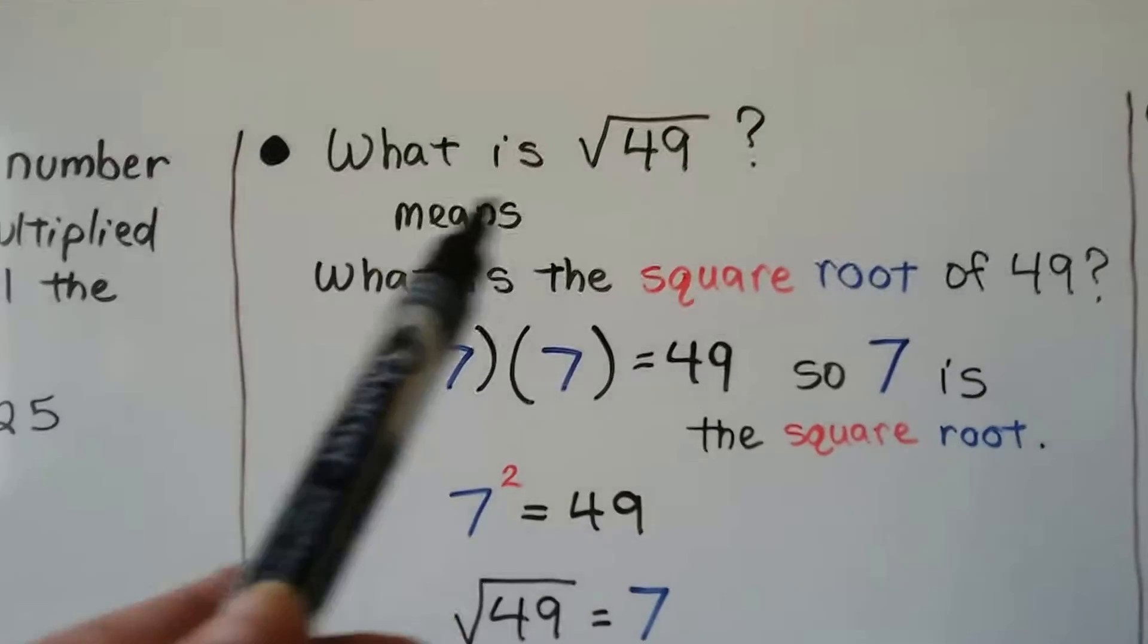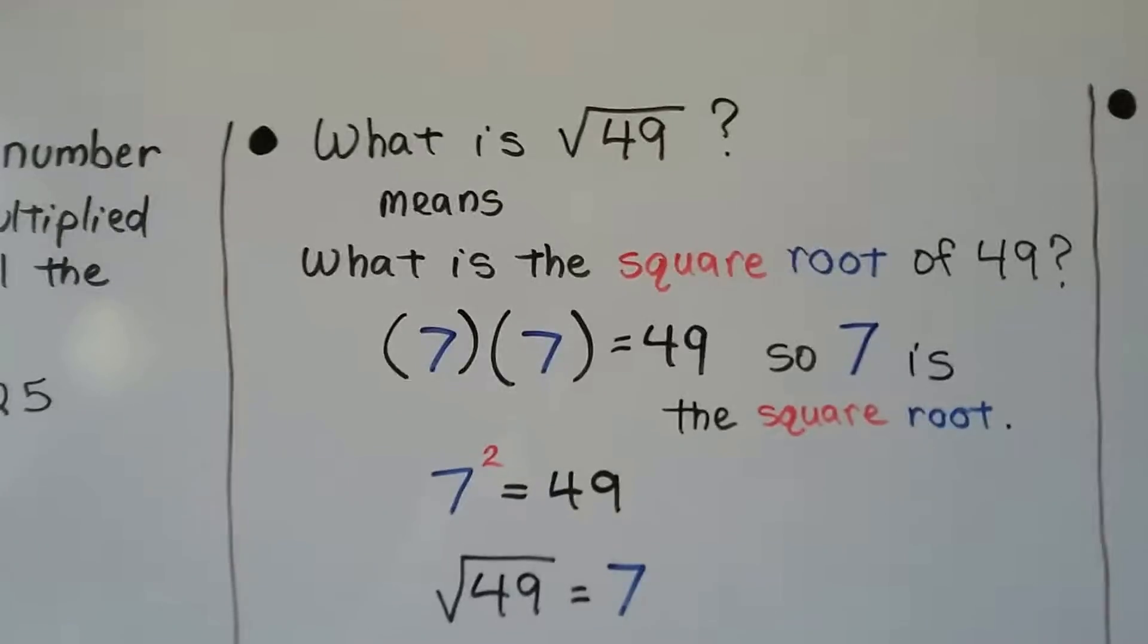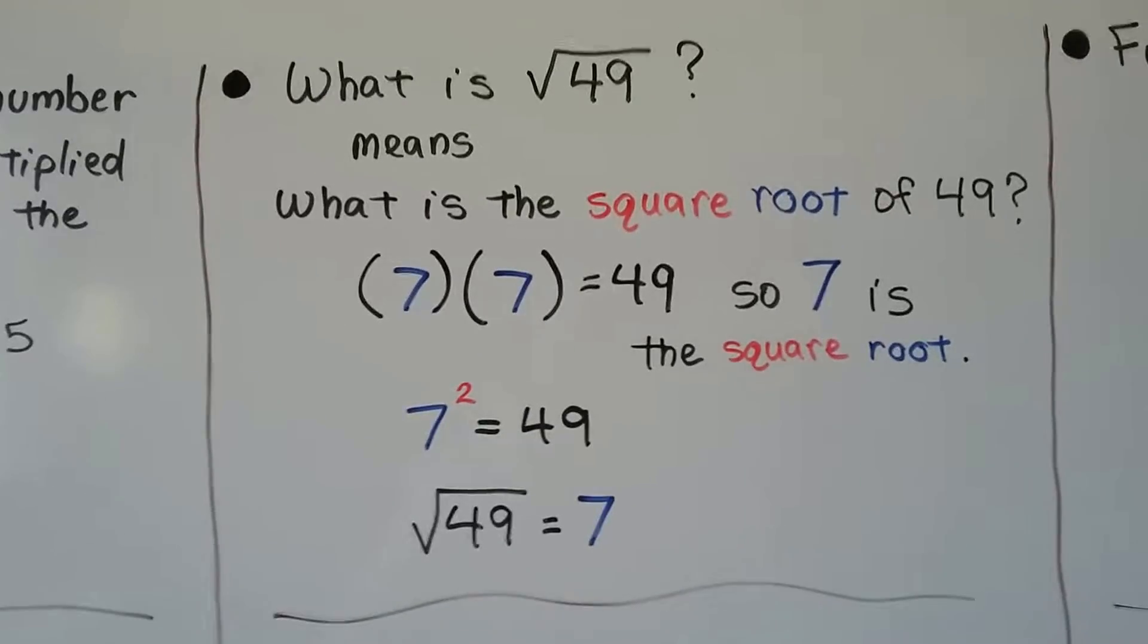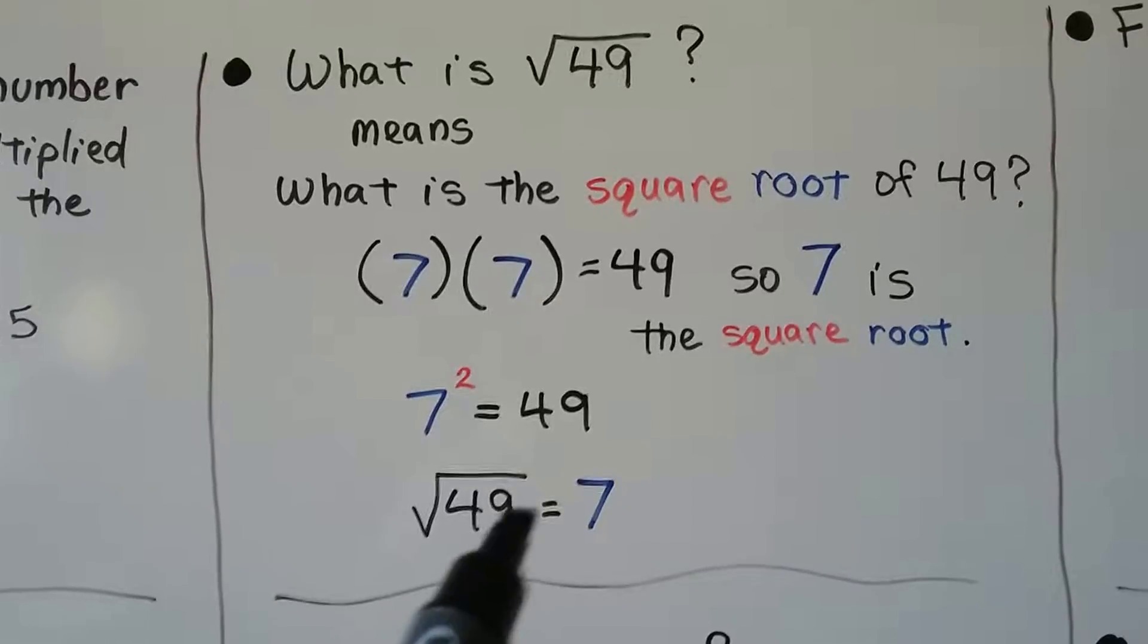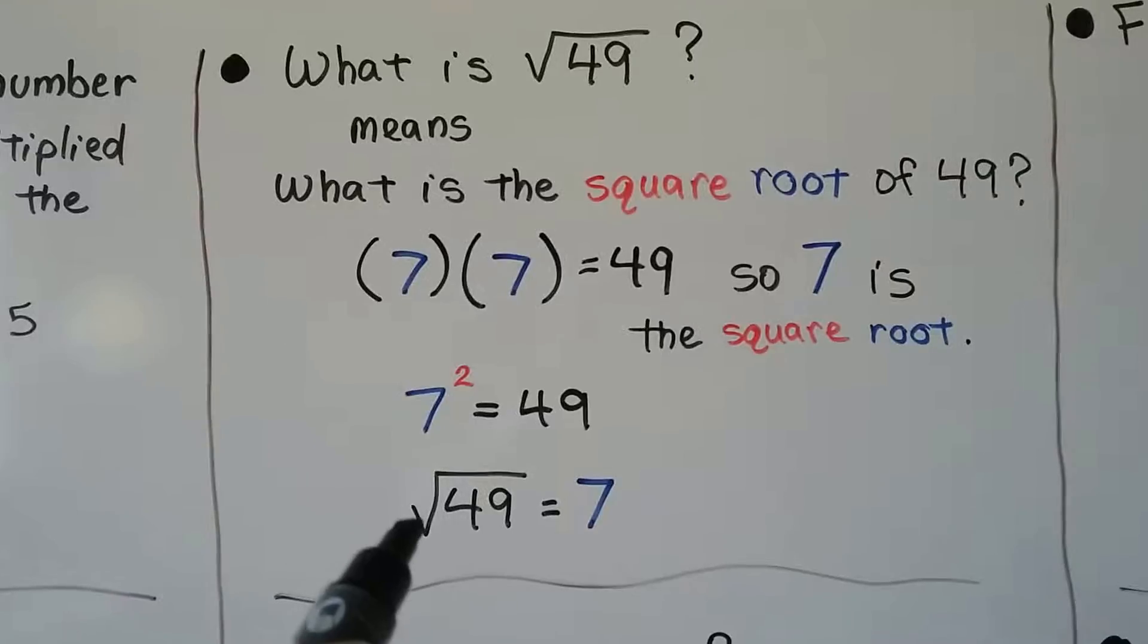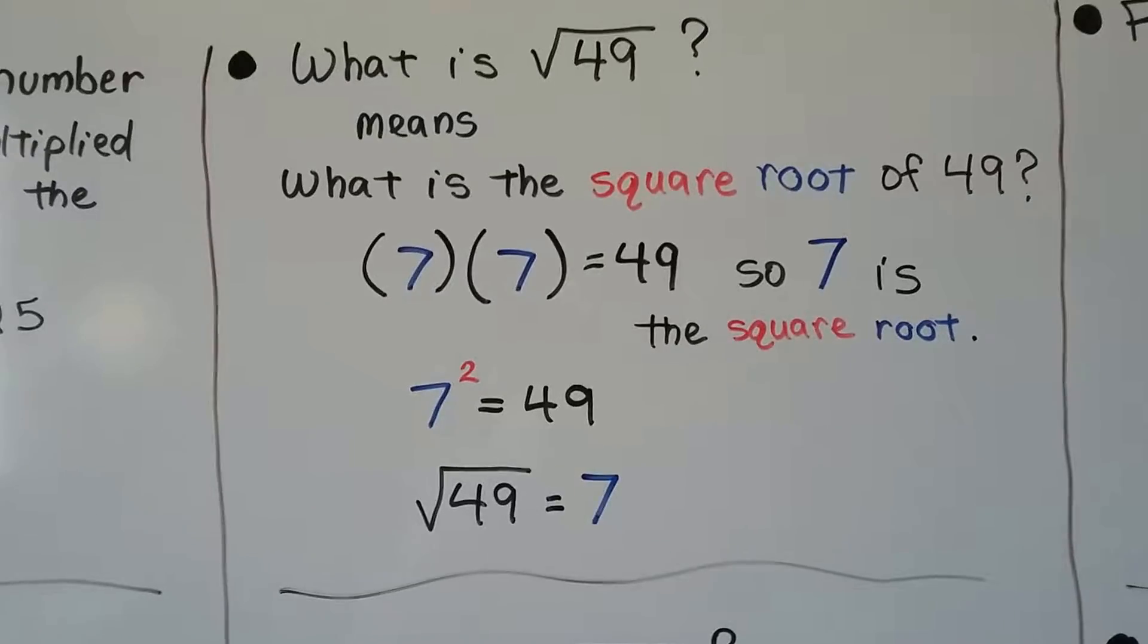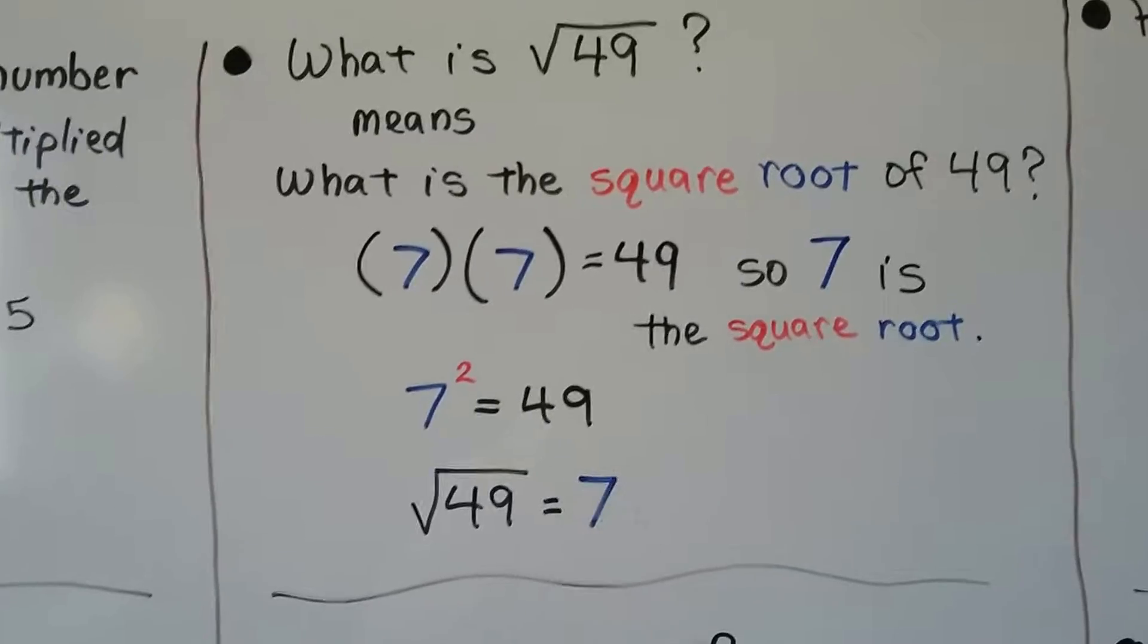When we see this, it means, what is the square root of 49? So, what number times itself equals 49? 7 times 7 equals 49. So, 7 is the square root. 7 squared equals 49. The square root of 49 equals 7. We can actually take this square root symbol off, this radical sign off, if we put that little 2 exponent by the 7. It'll remove that radical sign just by putting that little 2 up there.